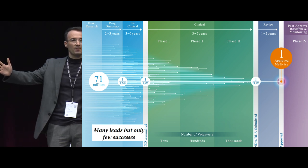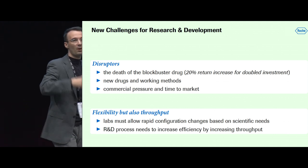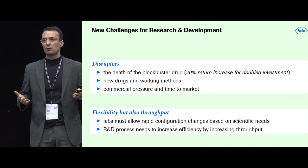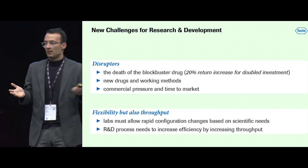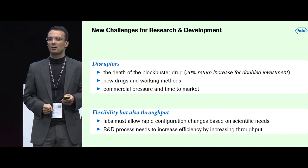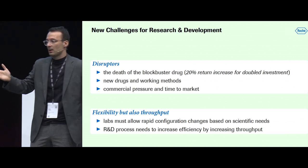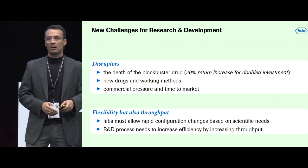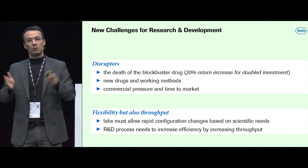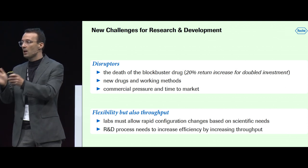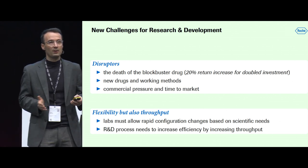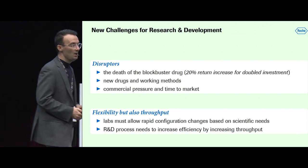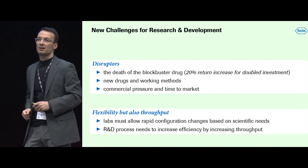On top of this existing process, there are new disruptors challenging research activity. There are no more low-hanging fruits — no drugs that just work for a large population. You would double your investment in research but only get a 20% return. New methods like gene therapy are happening now, and personalized healthcare is rising, because drugs work for certain categories of population rather than everyone. This diversifies research activity considerably. On top of that, there is commercial pressure from new players, which increases the complexity and speed required.